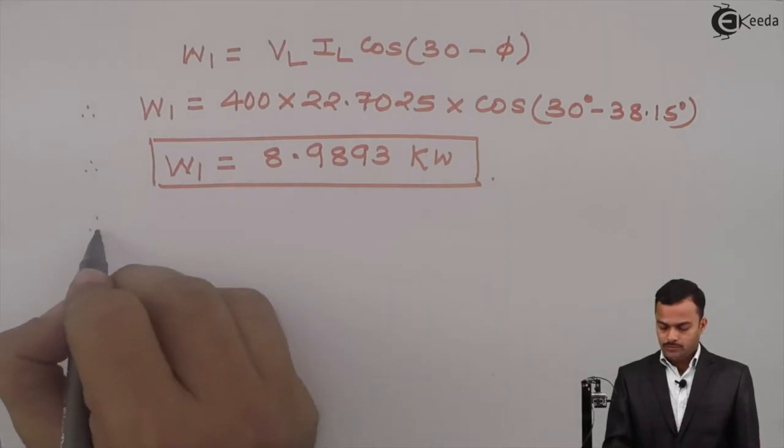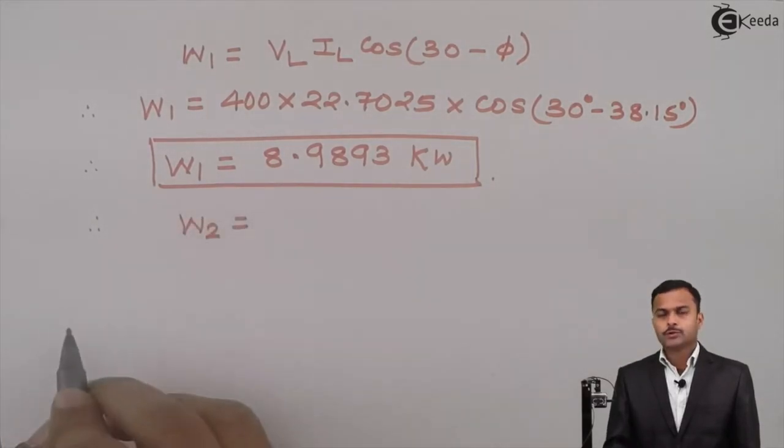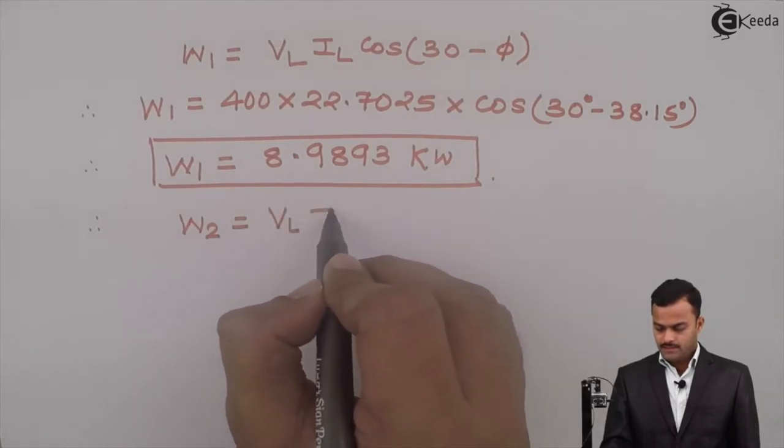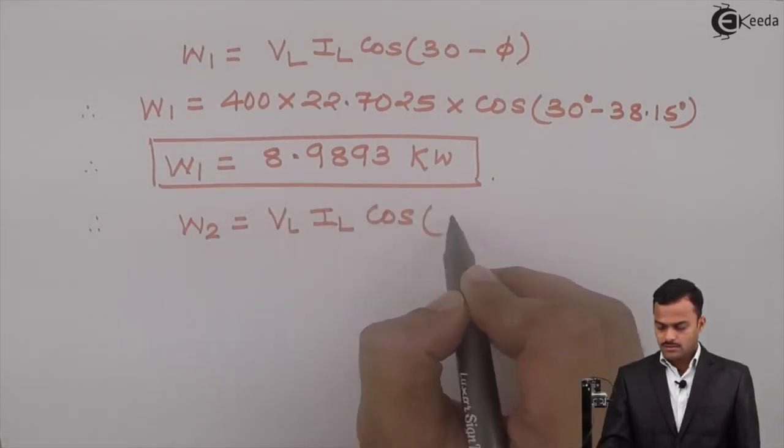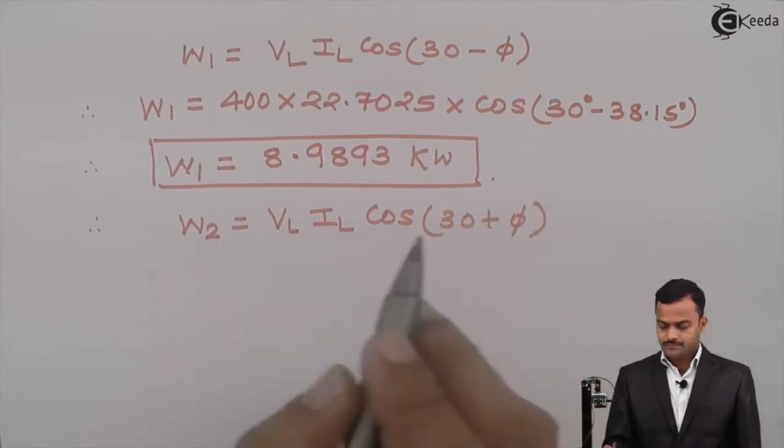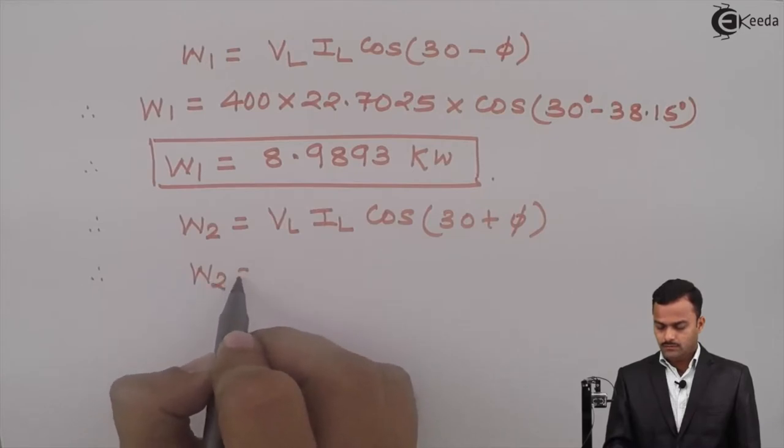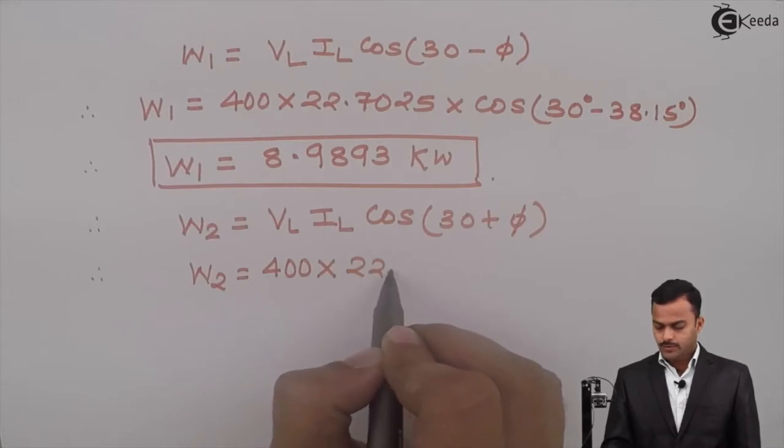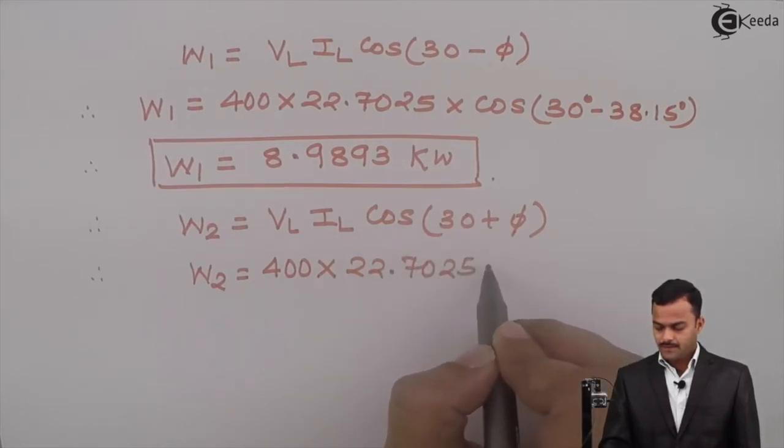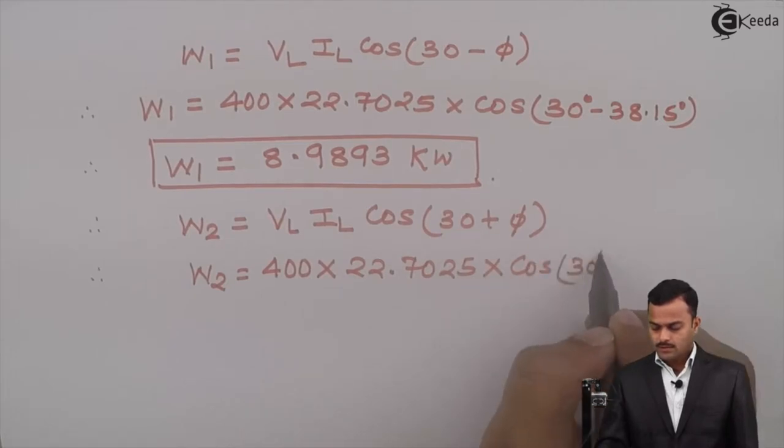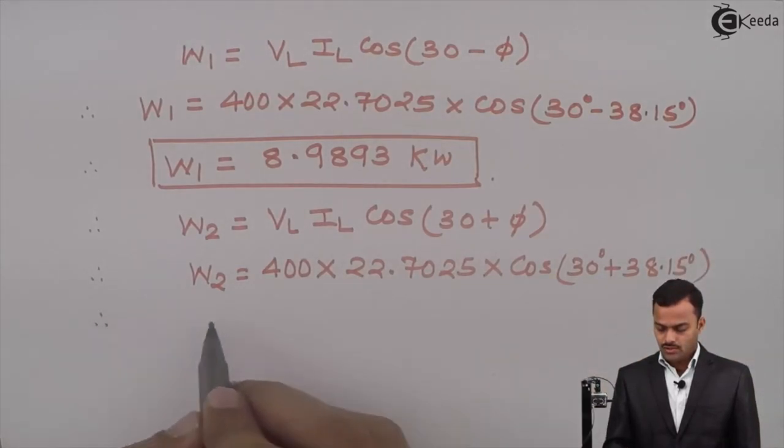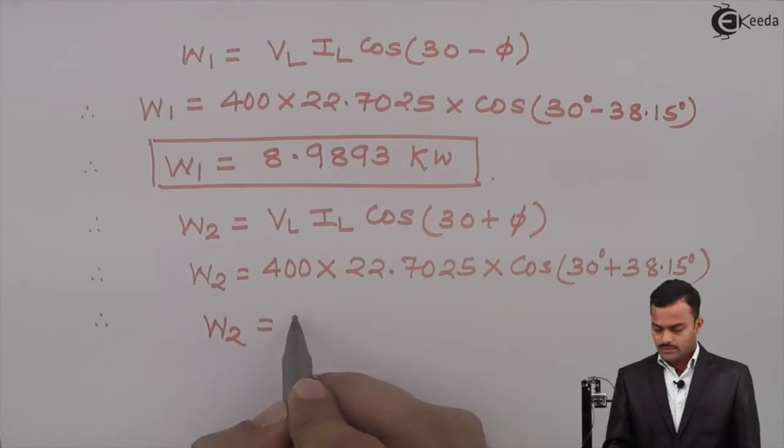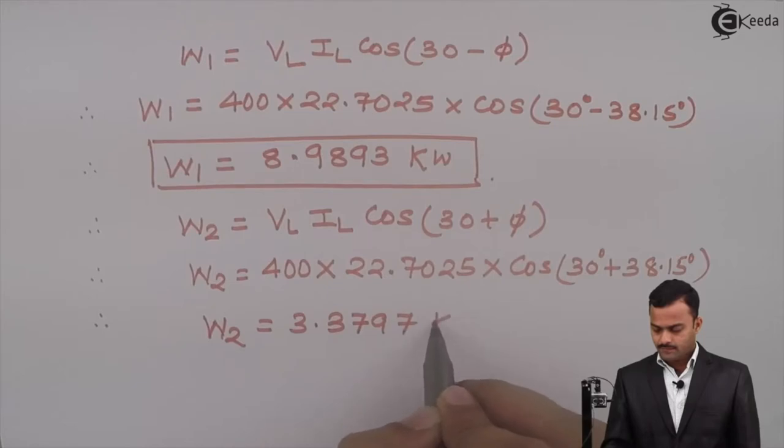And W2 is very simple: W2 equals VL times IL times cos(30 plus phi). So W2 equals 400 multiplied by 22.7025 multiplied by cos(30 plus 38.15). If you solve, you will get W2 as 3.3797 kilowatts.